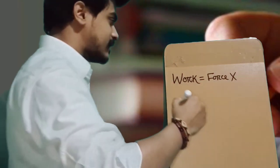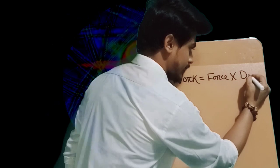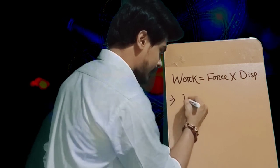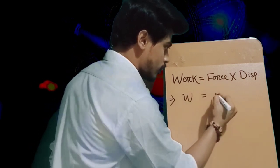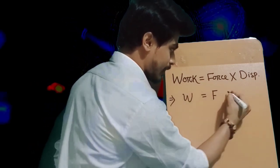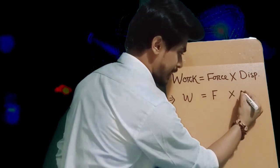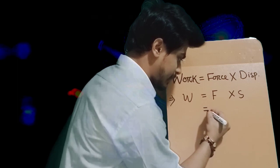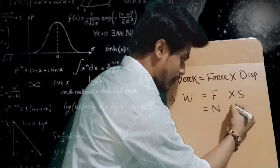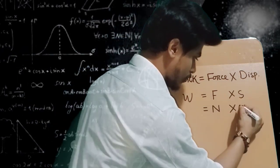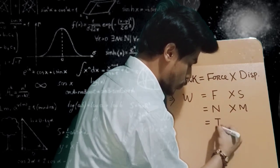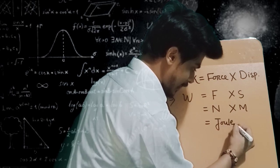Work is equal to force into displacement. Work is denoted by W, force is denoted by F, and displacement is denoted by S. The SI unit of force is Newton and displacement is meter. Work's SI unit is Joule.